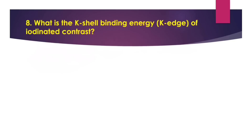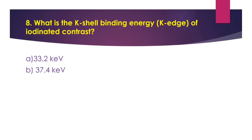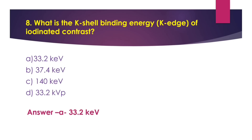Now let's see the eighth question. What is the K-shell binding energy or the K-edge of iodinated contrast? Option A 33.2 keV, option B 37.4 keV, option C 140 keV, and option D 33.2 keV. Note: keV means kilo electron volt, and kVp means kilo voltage peak. The answer is option A, 33.2 keV.